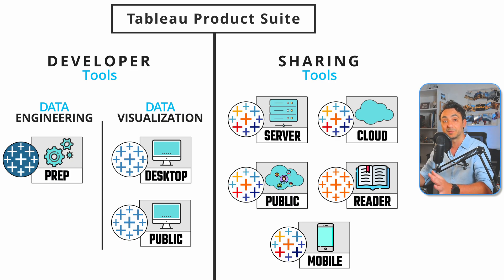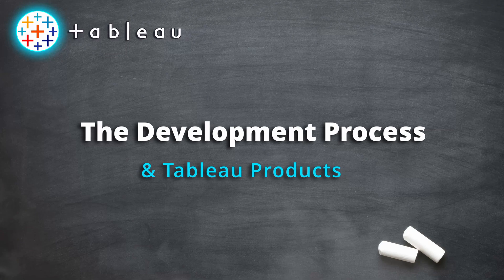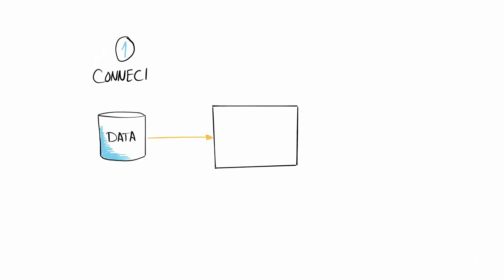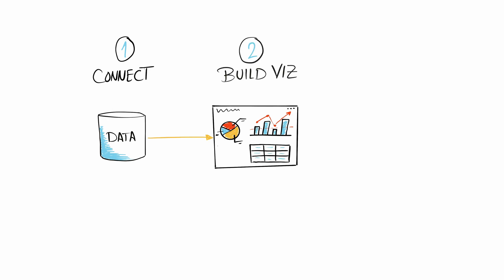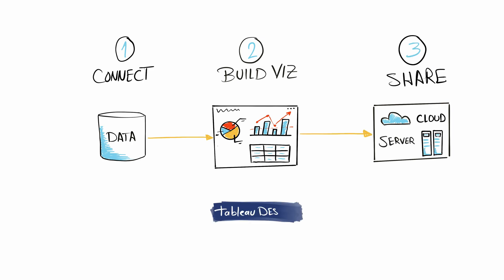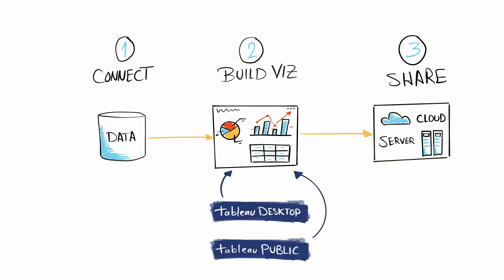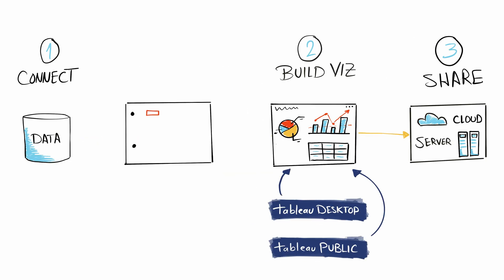Now that we understand the main categories and purposes of Tableau products, let's talk about the development process in Tableau. There are three simple steps: first, we connect our data to Tableau; second, we build our data visualizations to perform data analysis by creating reports, charts, and dashboards; and third, we share our work by publishing it. The two products used for these three steps are Tableau Desktop and Tableau Public Desktop.